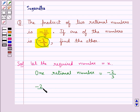We have minus 2 upon 3 multiplied by x is equal to minus 11 upon 5 as we are given that the product of two rational numbers is minus 11 upon 5.